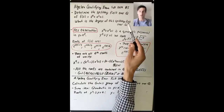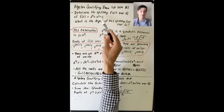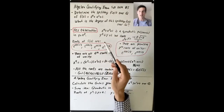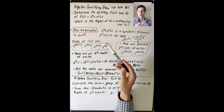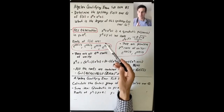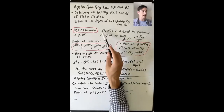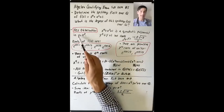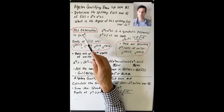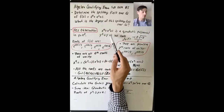What is the degree of the splitting field over Q? Or equivalently, what is the Galois group of this polynomial f(x)? The key observation is that x⁴ + x² + 1 is a quadratic polynomial in x². So if you make the change of variable y = x², this polynomial becomes y² + y + 1.